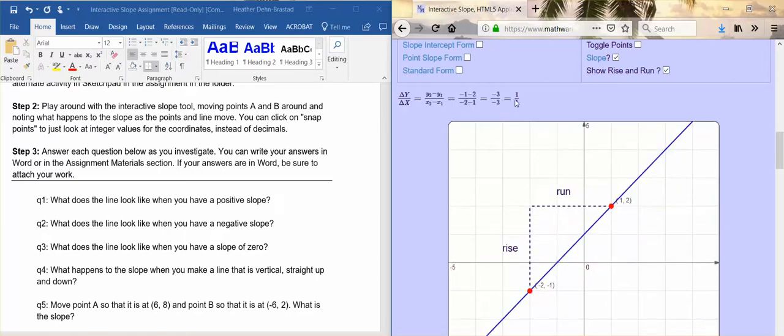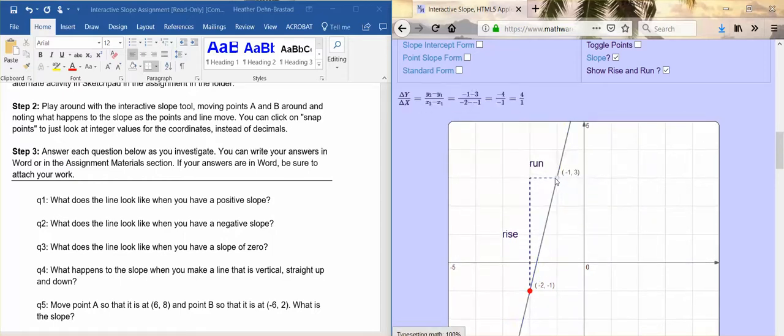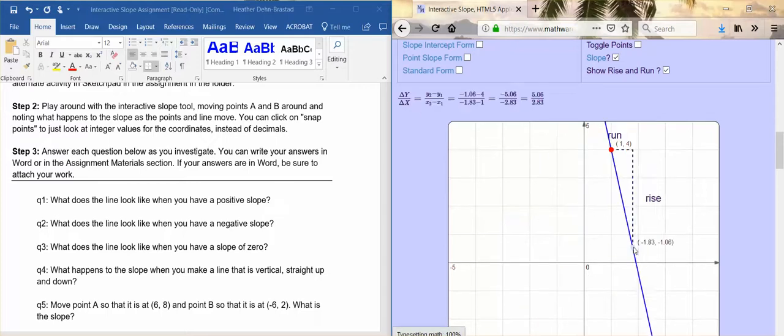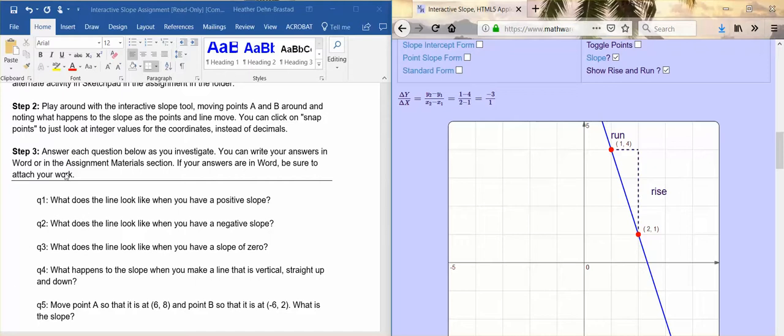The first thing you're going to do is just kind of move these around and you can see sometimes the answers look really crazy. You can move both the points and it changes the rise and the run here, and it changes what the answer is over here.